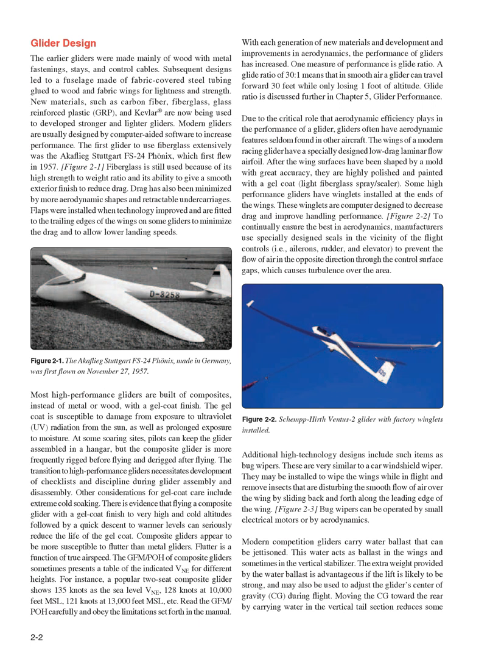Flaps were installed when technology improved and are fitted to the trailing edges of the wings on some gliders to minimize drag and to allow lower landing speeds. Most high-performance gliders are built of composites, instead of metal or wood, with a gel coat finish. The gel coat is susceptible to damage from exposure to ultraviolet (UV) radiation from the sun, as well as prolonged exposure to moisture.